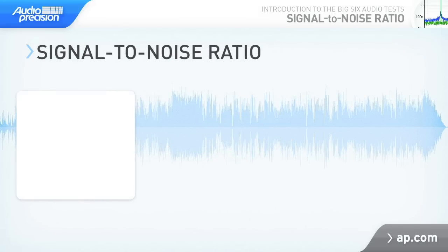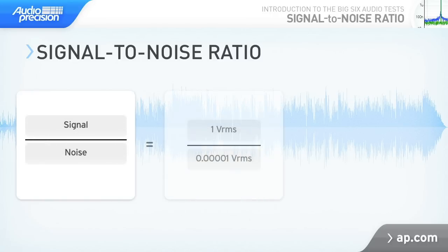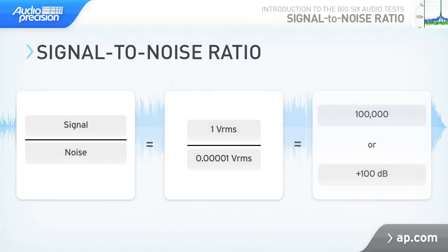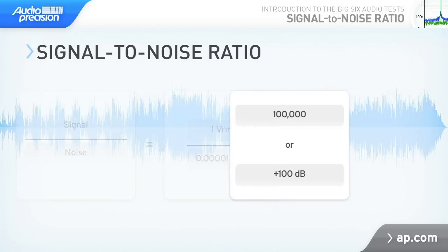SNR is actually two level measurements followed by a simple calculation. First, we measure the output level of the device under test with no input signal. Then, we apply a signal to the device and take another level measurement. Then we divide.